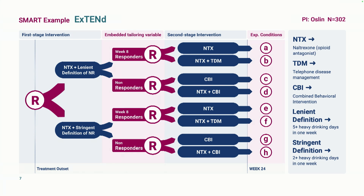The SMART for EXTEND begins with a randomization at treatment outset to naltrexone — everybody gets naltrexone. But some are randomized to naltrexone with a lenient definition of non-response, and some to naltrexone with a stringent definition. The lenient definition allows for five or more heavy drinking days in one week, while the stringent definition is two or more. So we're randomizing to two different definitions of non-response, not to two different stage-one interventions.